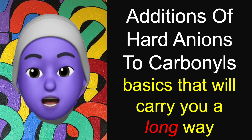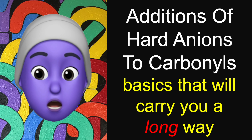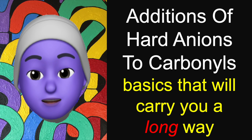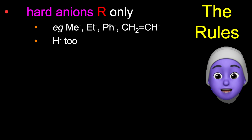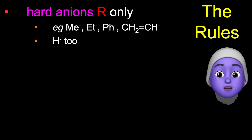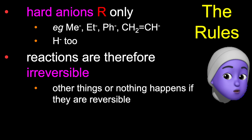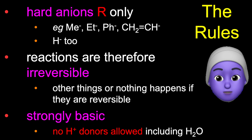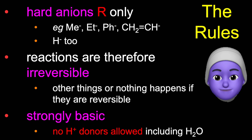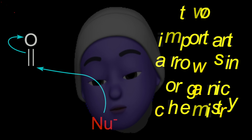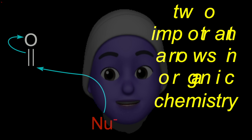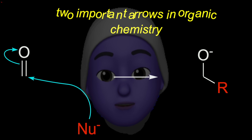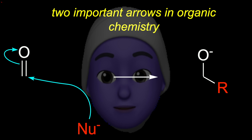It's good to be talking to you today about additions of hard anions to carbonyl compounds. This is an important concept that occurs in many branches of introductory organic chemistry. For now we won't worry about where the R minus anion comes from. It could be many that add to carbonyl compounds irreversibly, and there can be no proton donors in the solution, like water or alcohols. This is one of the most important two-arrow combinations in organic chemistry. A nucleophile attacks the carbonyl carbon and electrons move out of there onto the most electronegative atom, oxygen.